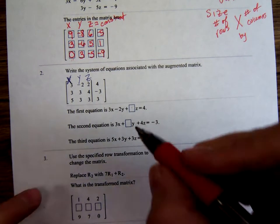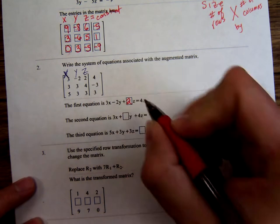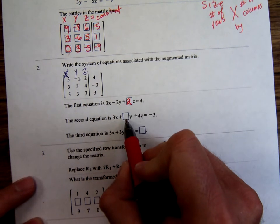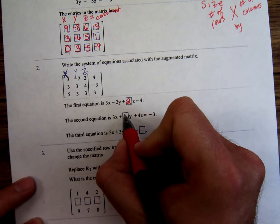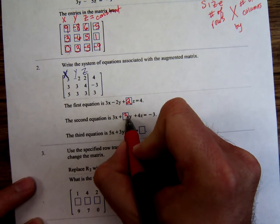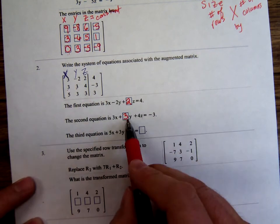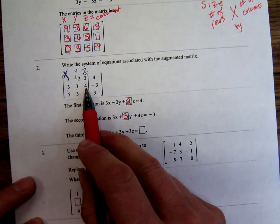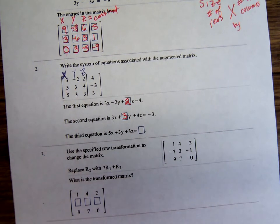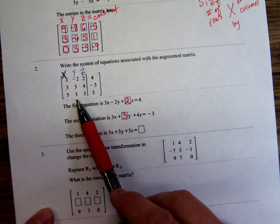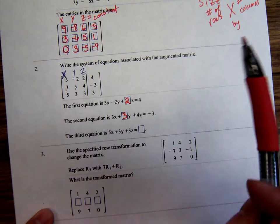So, what would go in this first blank here? Is it going to be a 2? What about this blank right here? Is it 3? See, 3, 3, 4: 3x plus 3y plus 4z equals negative 3. And the third equation would be 5x plus 3y plus 3z equals 3.